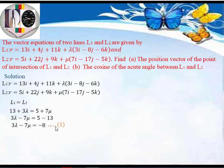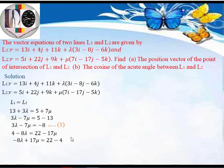Equating the j-components of L1 and L2: the j-component of L1 is 4 - 8λ, and for L2 it is 22 - 17μ. So: 4 - 8λ = 22 - 17μ. Rearranging gives: -8λ + 17μ = 22 - 4 = 18. We call this Equation 2.